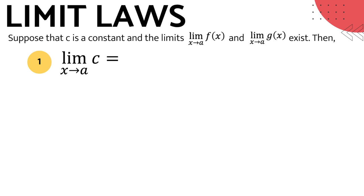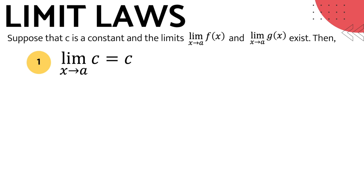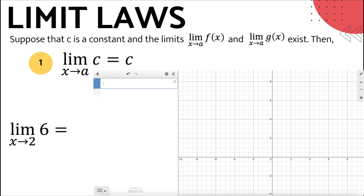The first law is the limit of a constant, and it states that the limit of a constant c as x approaches a is the constant c itself. Let me give you an example: the limit of 6 as x approaches 2 is 6. Let me illustrate this example by using table of values and the graph of the constant f(x) = 6.